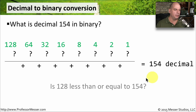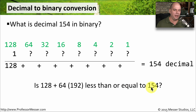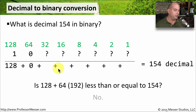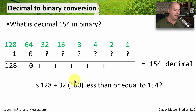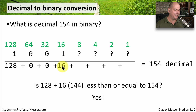We start asking questions. Is 128 less than or equal to 154? Yes, so we put a 1 under 128. Moving right: is 128 plus 64 less than or equal to 154? Those two together are 192, which is not less than or equal to 154, so we put a 0. Is 128 plus 32 less than or equal to 154? That's 160 — not less than or equal to 154, so another 0. Is 128 plus 16 less than or equal to 154? That's 144, which is less than or equal to 154, so it gets a 1 and we add 16 into the mix.